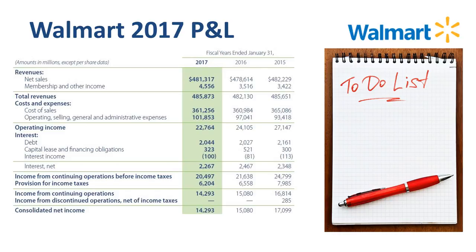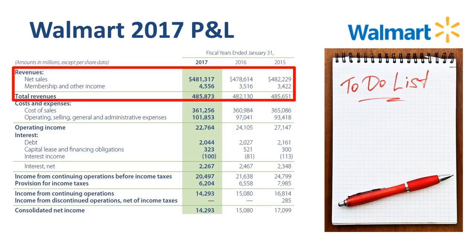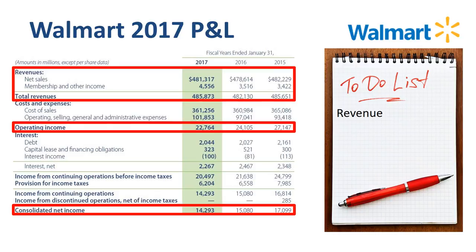My proposal would be to first dive into the revenue performance, which seems to have dropped from 2015 to 2016 and then has come back up in 2017. What are the main drivers for revenue? Next, I would look into the margin performance — how have gross margin, operating margin, and net income developed in relation to the fluctuations in revenue?